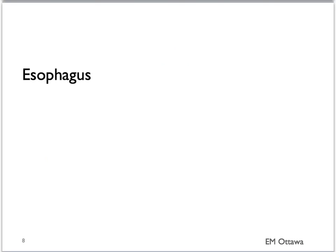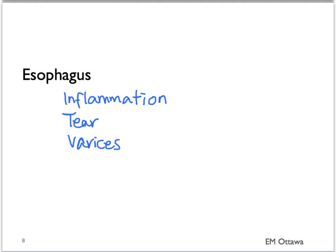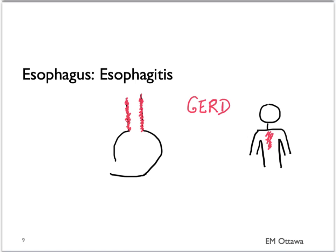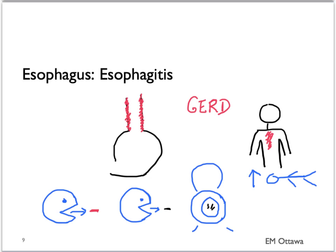Let's move on to the esophagus. There are a few causes of bleeding from the esophagus, including inflammation, tears, or varices. Esophagitis, or inflammation of the esophagus, often presents with symptoms associated with gastroesophageal reflux. The patient might present with retrosternal chest pain that is worse when lying down and better when they sit up. The pain is usually worse after a big meal as well. In terms of presentation, it tends to be small volume — it can be hematemesis, coffee ground emesis, or melena.